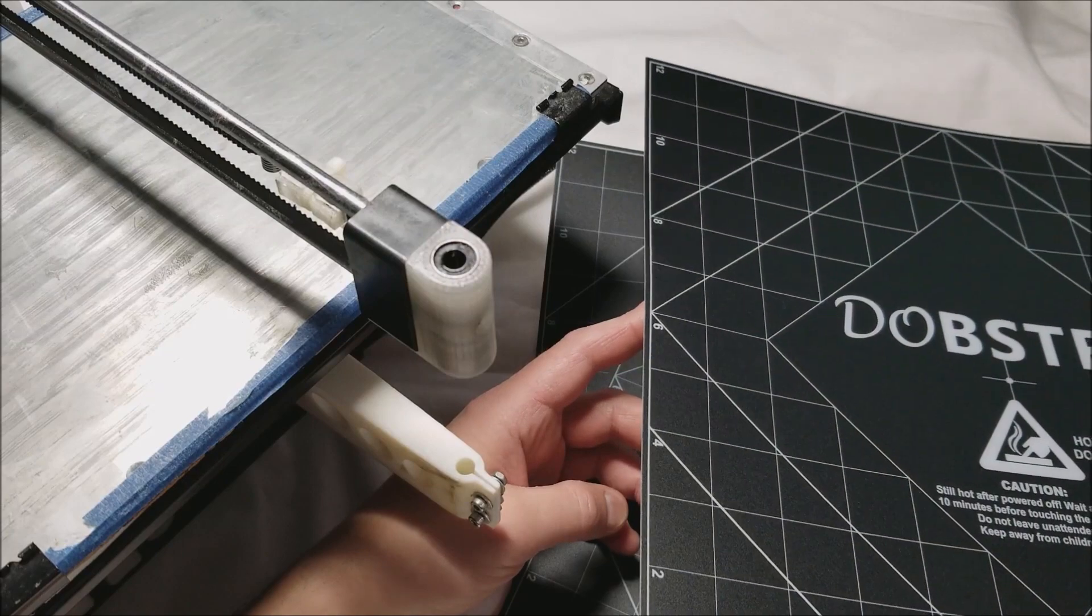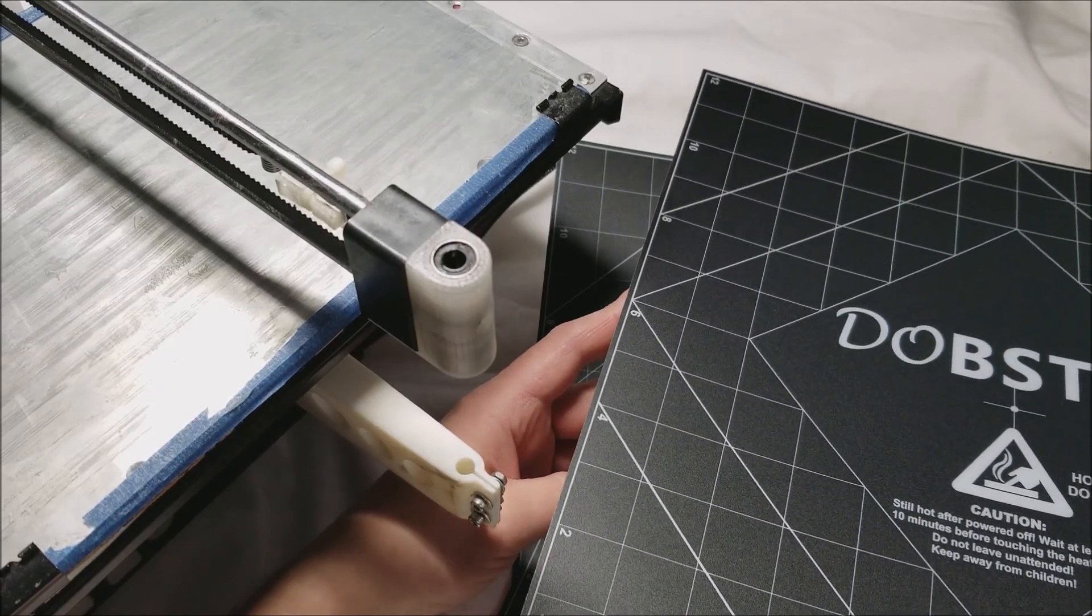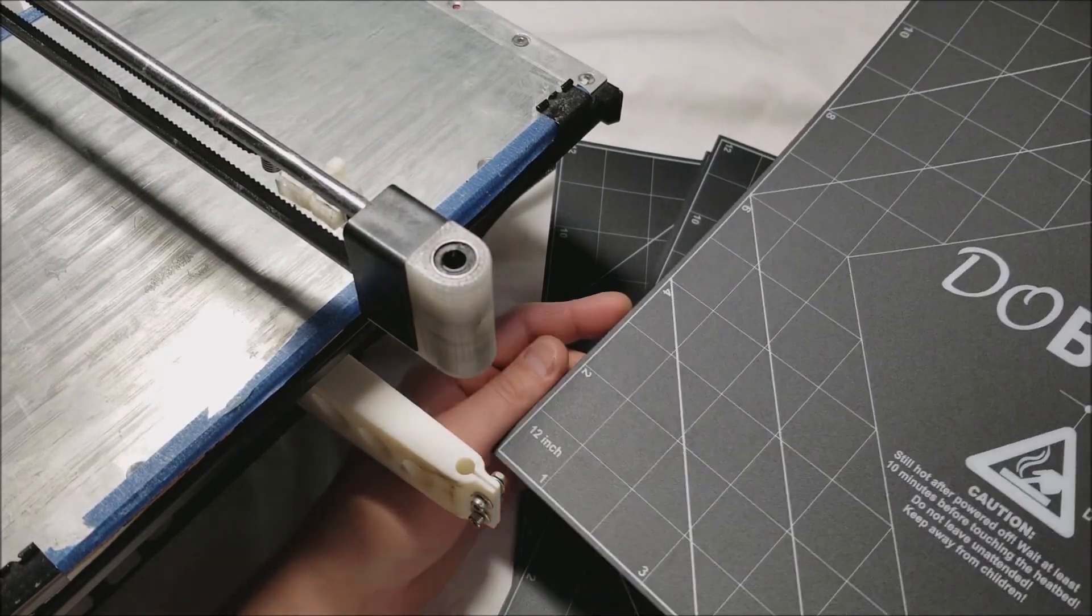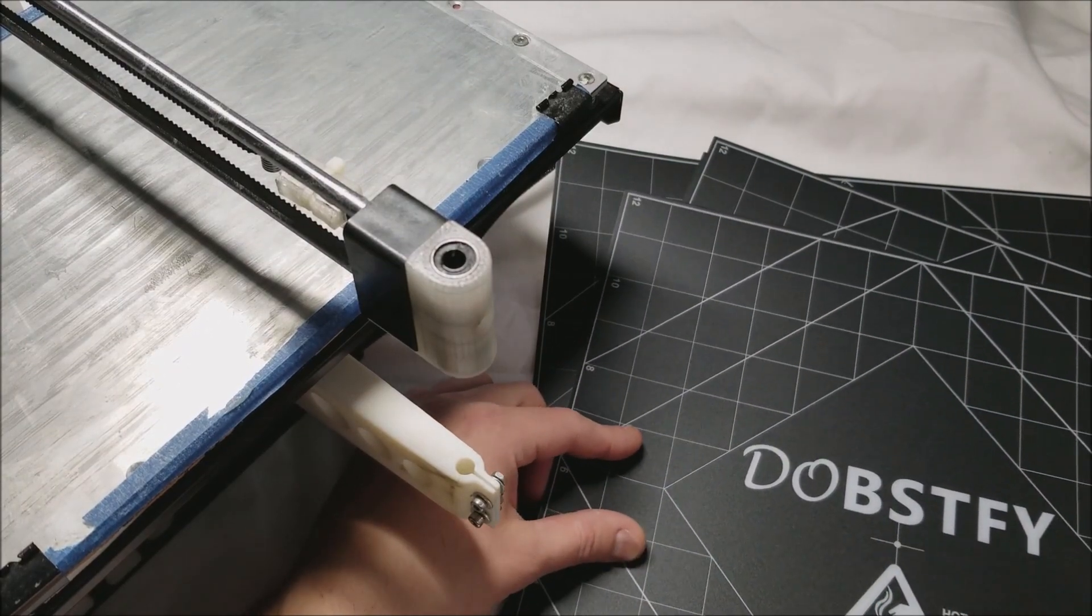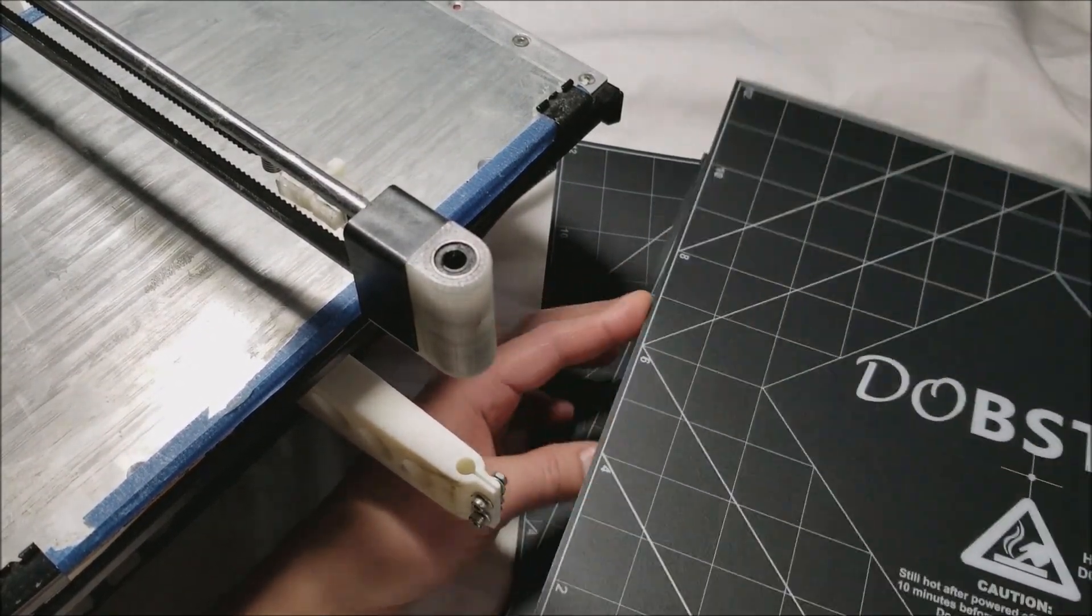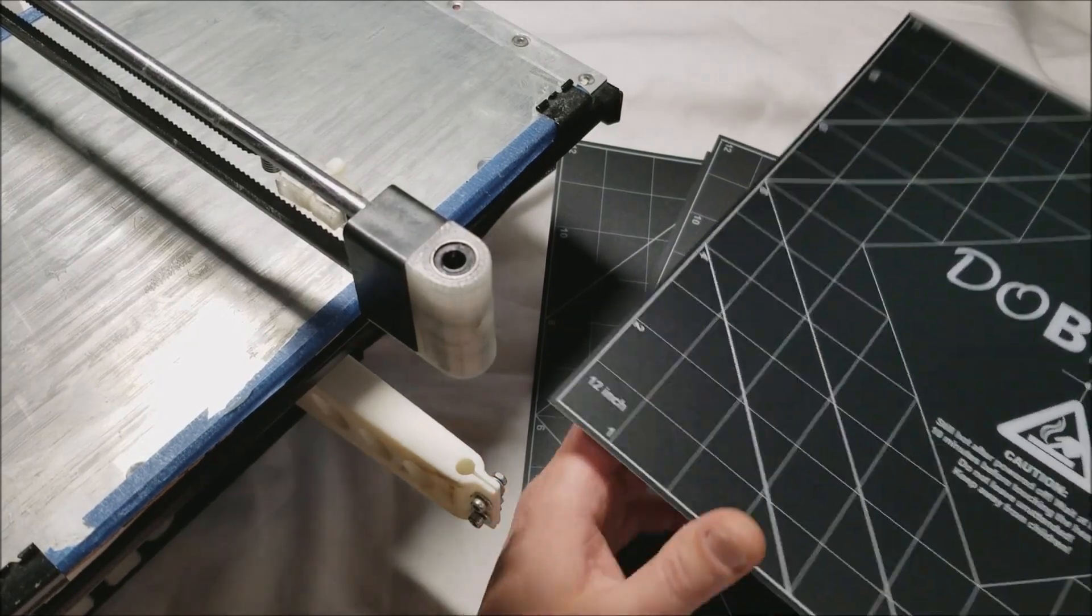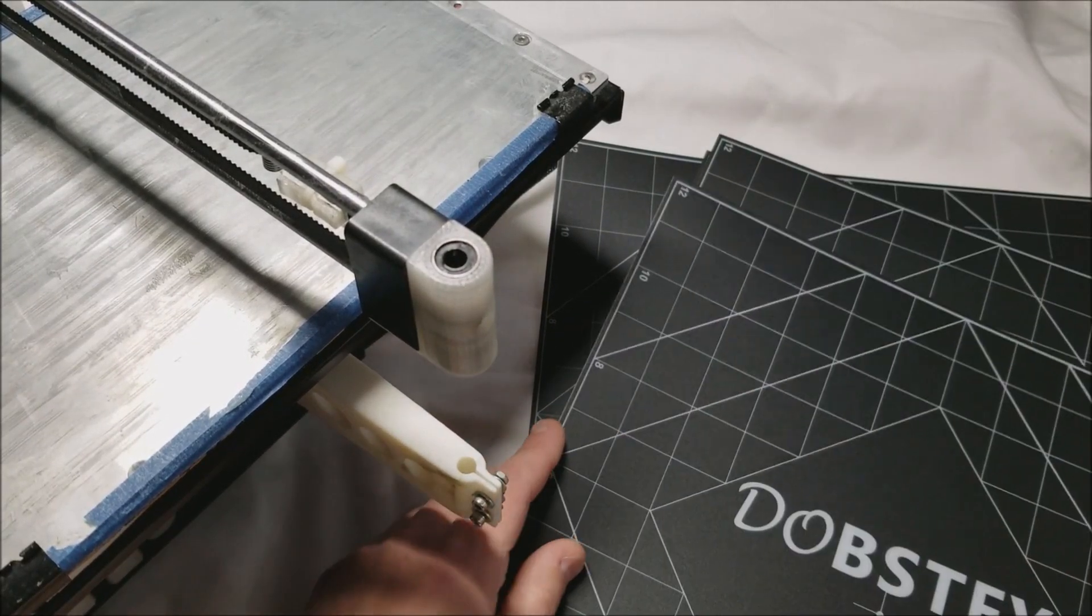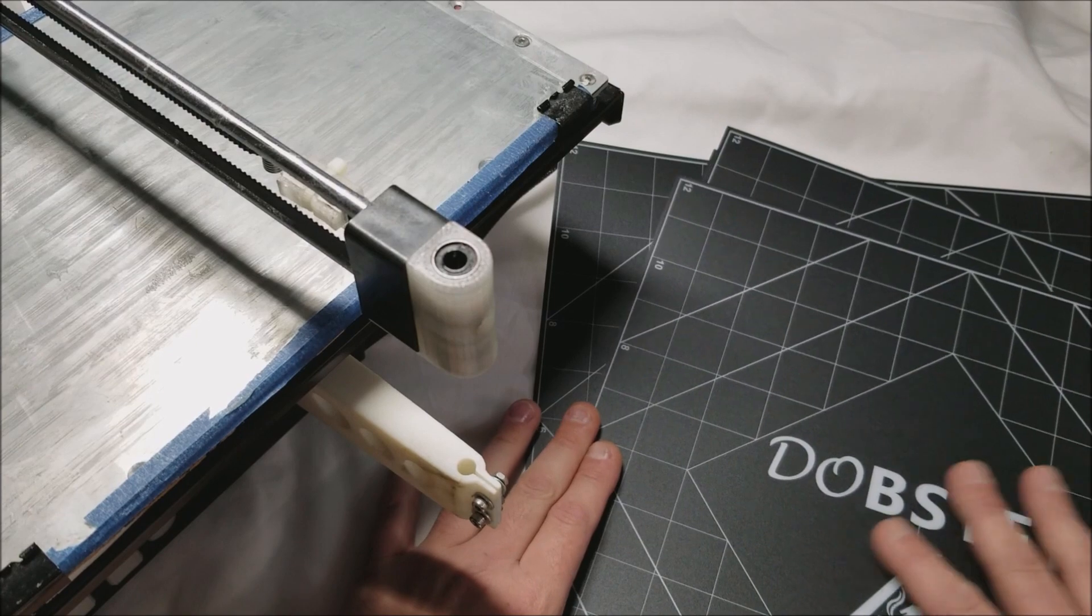Again it's from Dobstify. It seems interesting. It seems thicker than BuildTak. Again I've tried BuildTak before. It does seem thicker than BuildTak and it's a matte surface but it's not very rough.